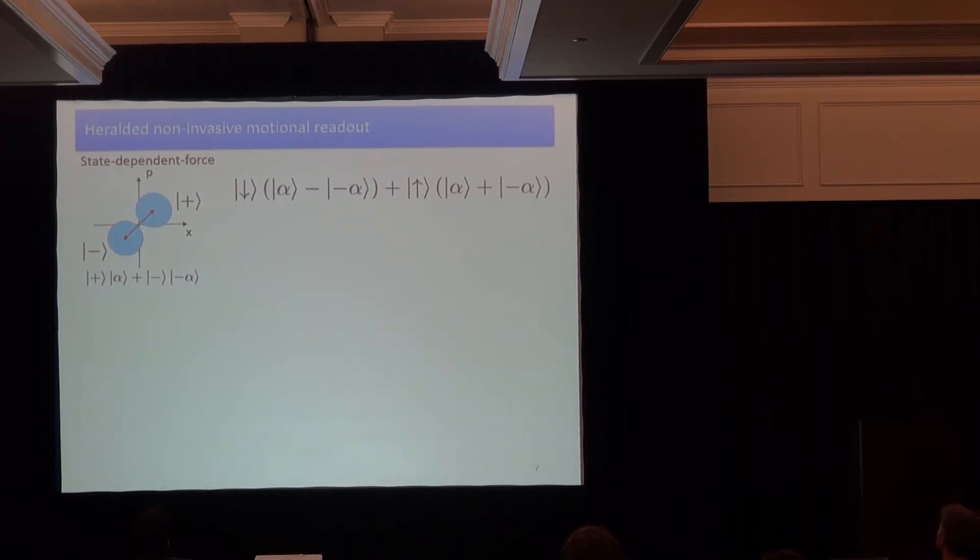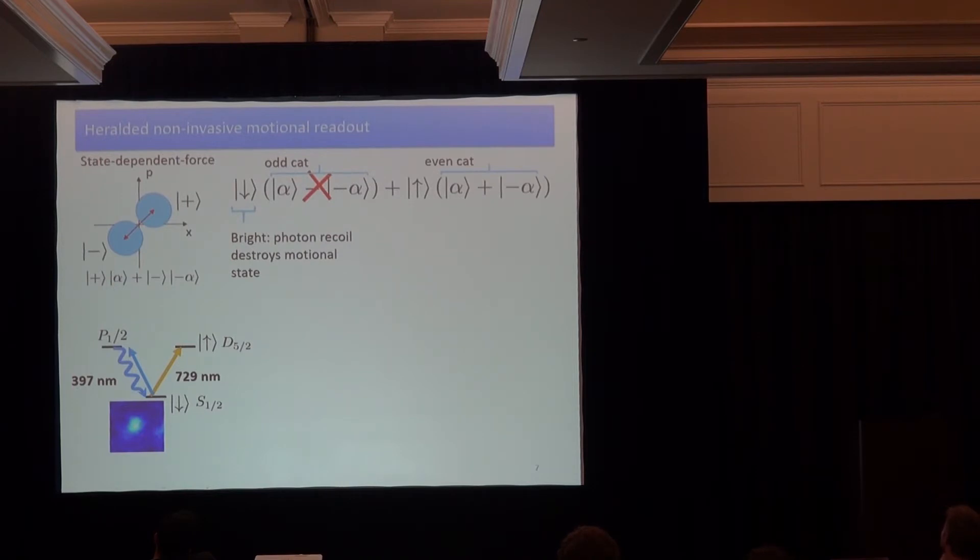But what does this now mean for our motional state after we, for example, have prepared this entangled state between our motional oscillator and the internal state. So we first can rewrite that state again in the basis of measurement, the up-down basis, and we see we have the up-down state entangled with what we call a cat state in an oscillator, a superposition of coherent states. If we now detect and we find the ion to be bright, then we would know that we project it in this odd cat state with the minus sign between, but unfortunately scattering of photons leads to momentum kicks with each scattering event, so we will not end up quite in this state. But this is very different if we don't detect any photons, we don't scatter anything, so we have nicely prepared this even cat state, and it's intact.